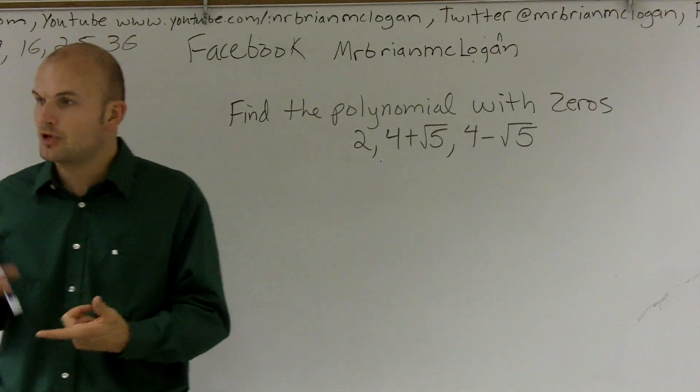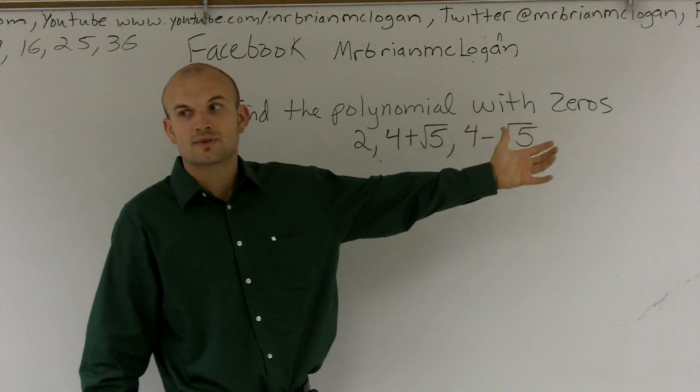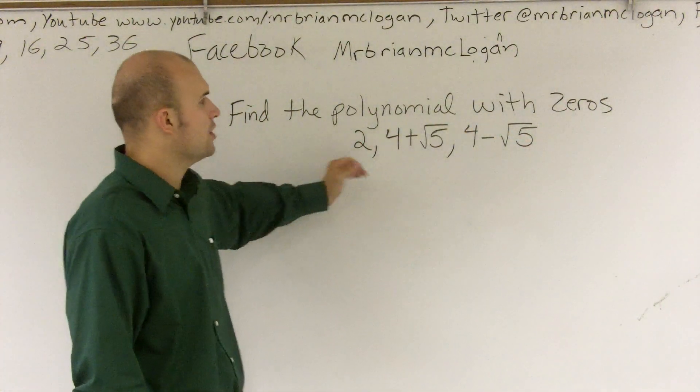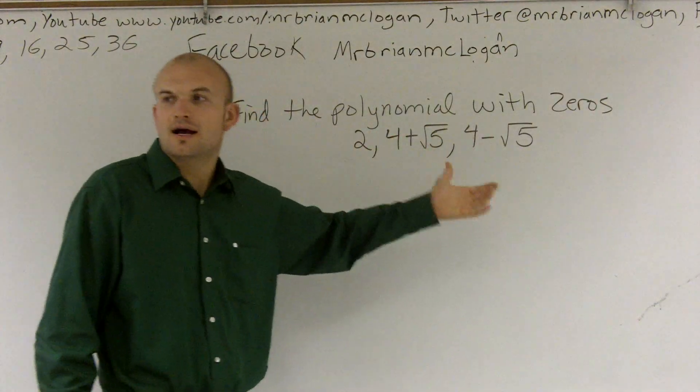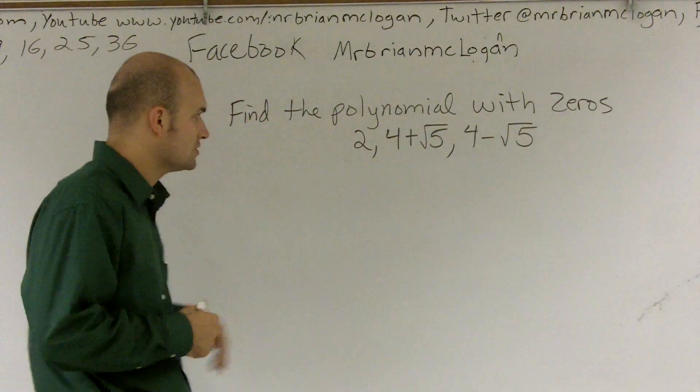More often than not, you're going to have to do the quadratic formula or complete the square, where you're going to get these irrational zeros for your function. So it's very important for you to know, if I give these zeros, what do they make our equation look like, or our function look like?